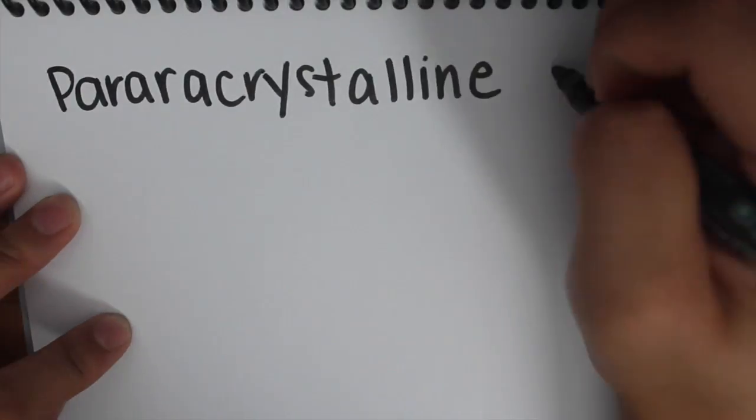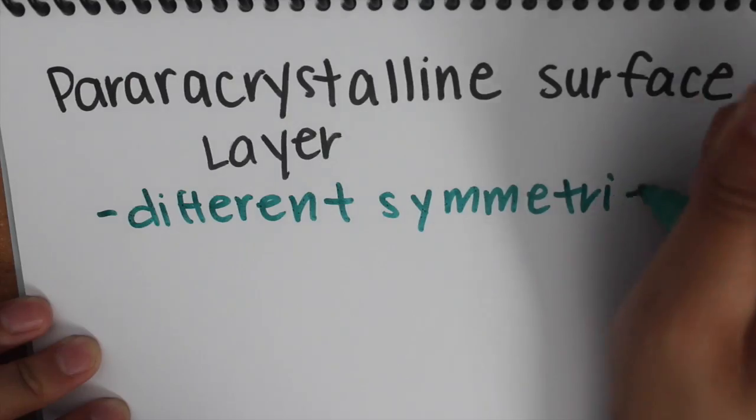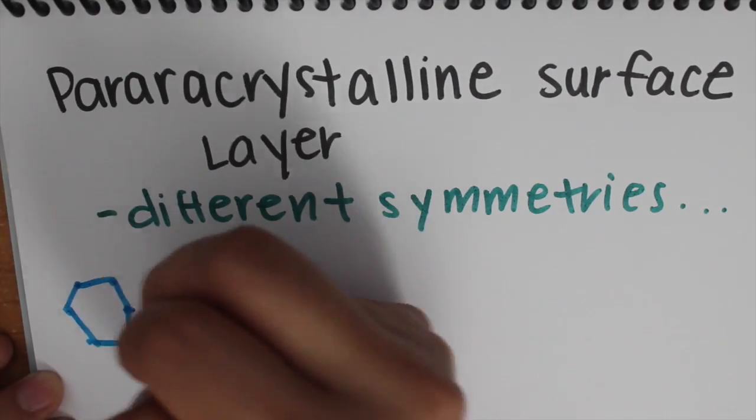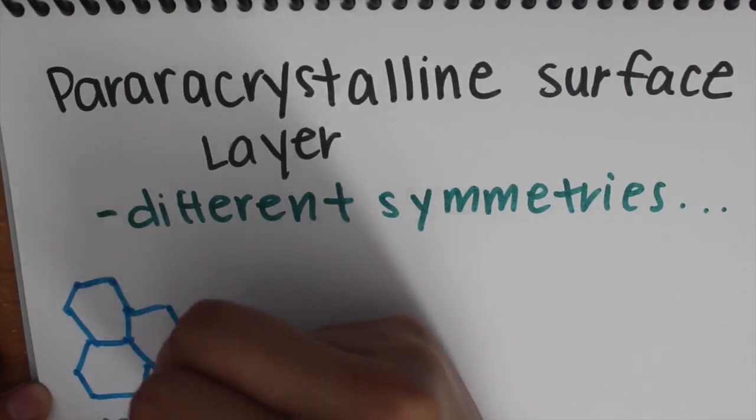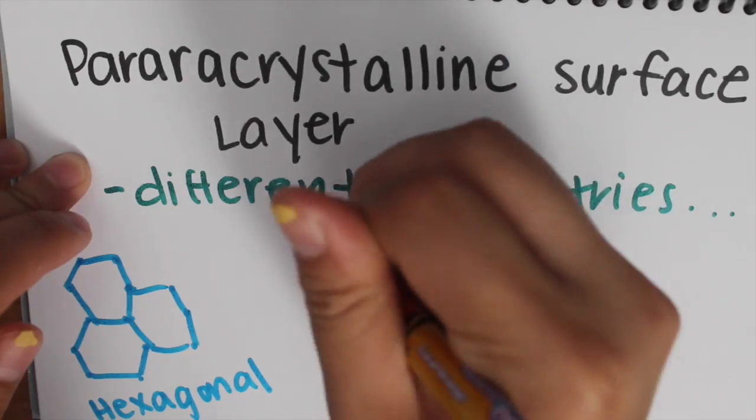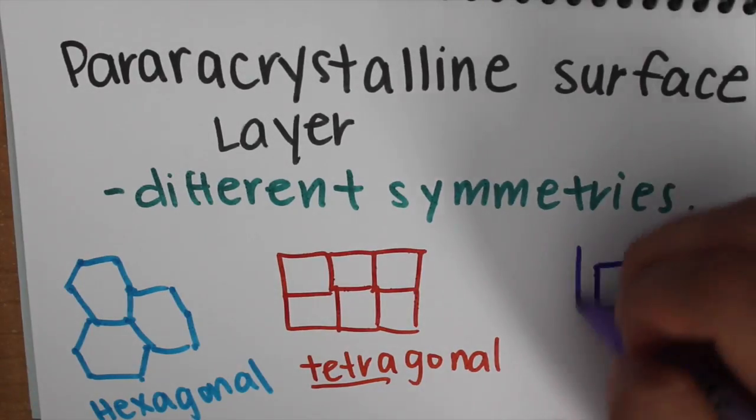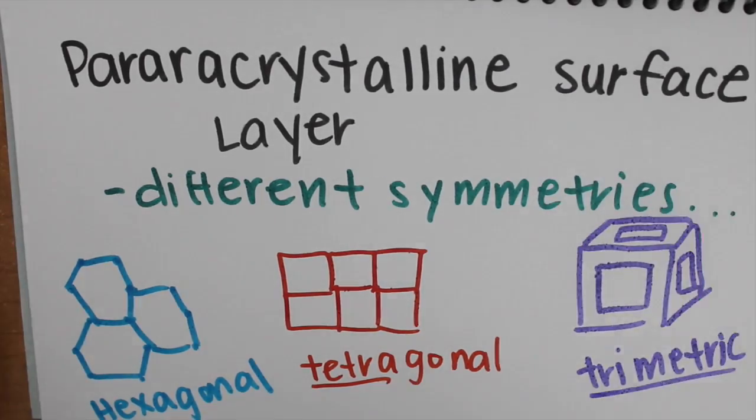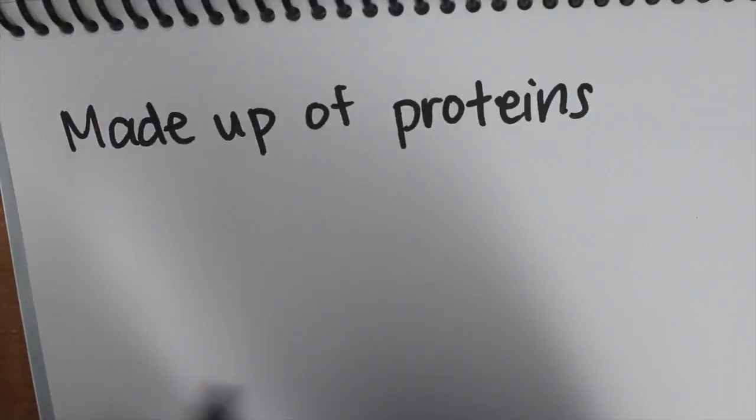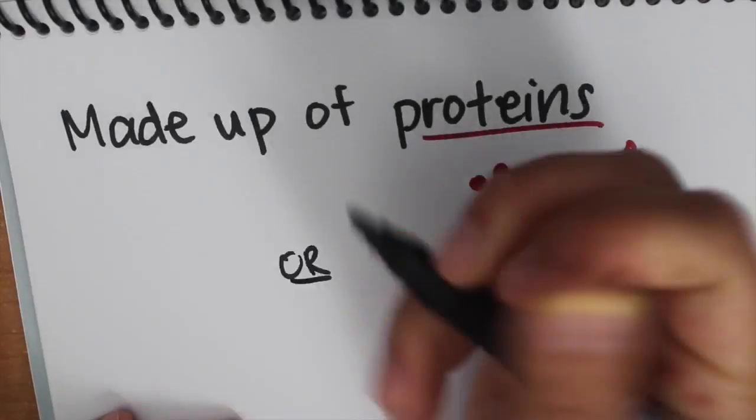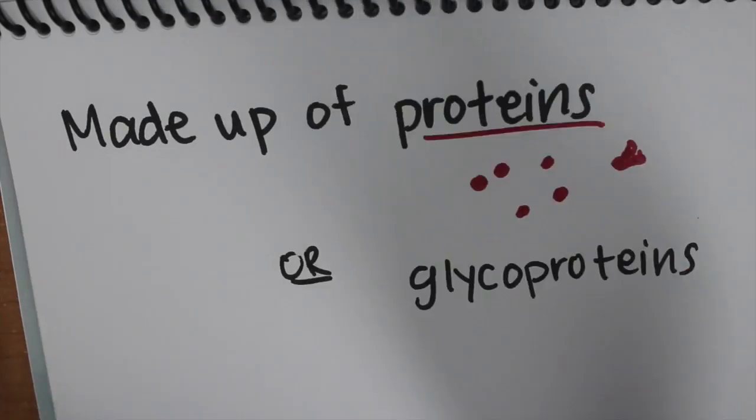They have a paracrystalline surface layer and can have different symmetries such as hexagonal, tetragonal, and trimetric. They all depend on the subunits composed. Made up of proteins or glycoproteins.